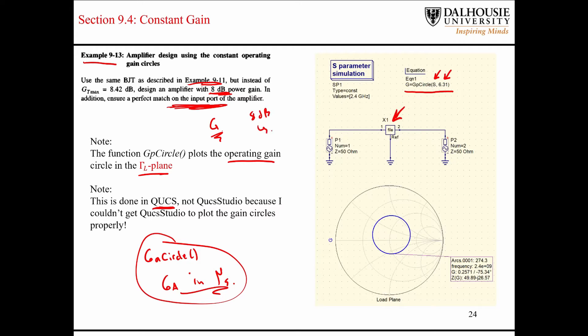So, 8 dB is 6.31 on a linear scale. So, I explicitly showed down here that, just to remind us that this is in the load plane, so this is in the gamma-L plane. And you can see the gain circle for the operating gain of 8 dB, shown here in the gamma-L plane.